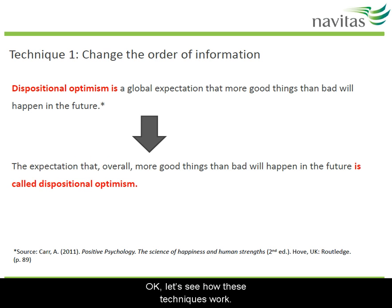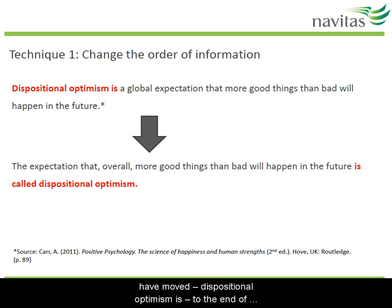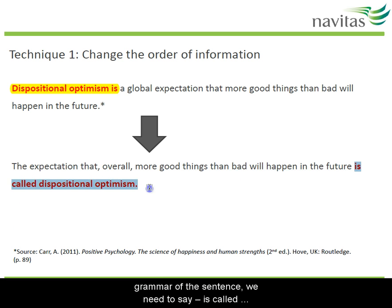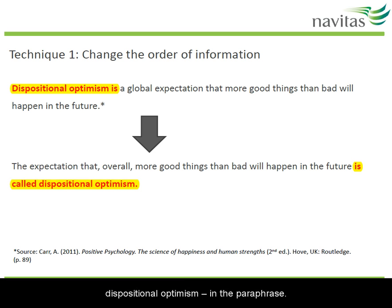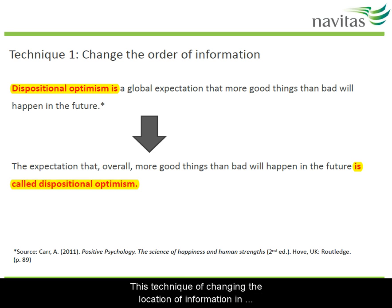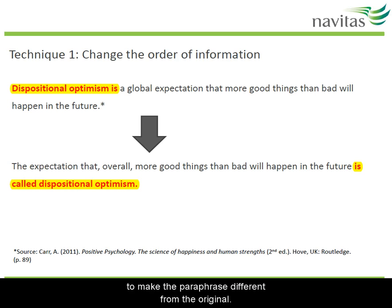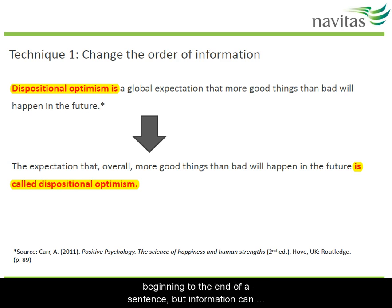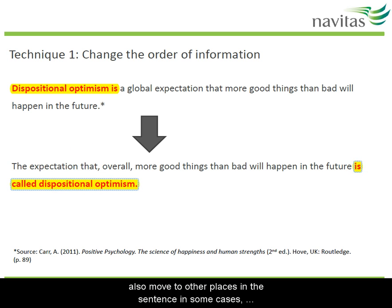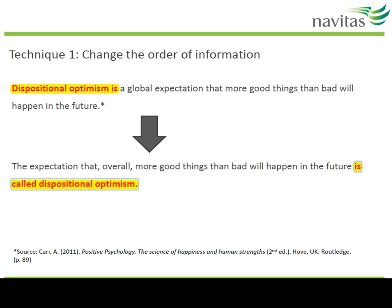Let's see how these techniques work. In our example, 'dispositional optimism is' moves to the end of the sentence; because we're changing the grammar, we say 'is called dispositional optimism' in the paraphrase. This technique of changing the location of information is easy to forget, but it's really important to make the paraphrase different from the original. Information can move from the beginning to the end of a sentence, or in some cases to the middle, depending on the grammar and length of each sentence.